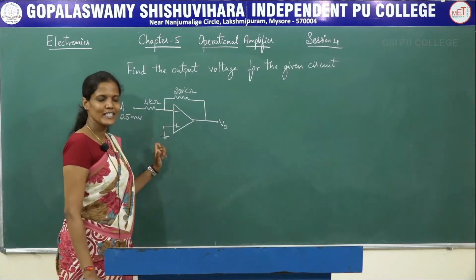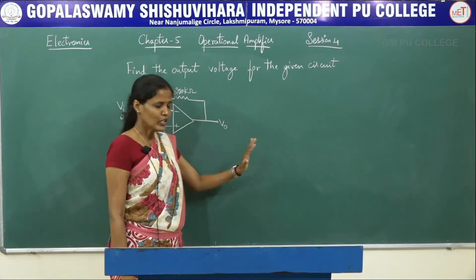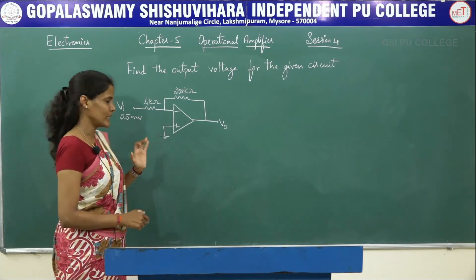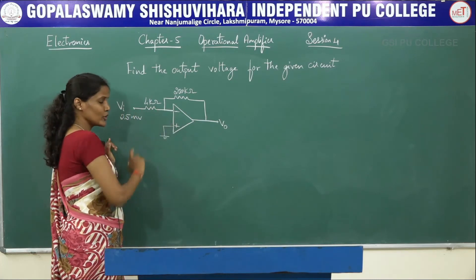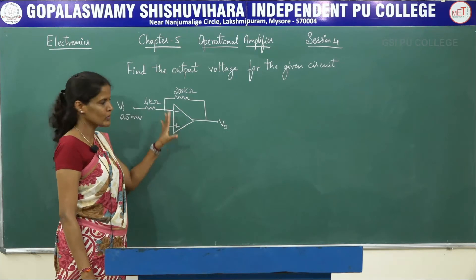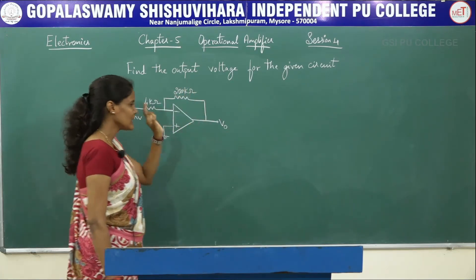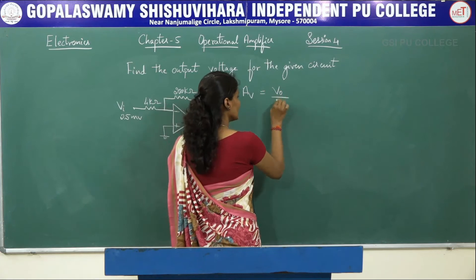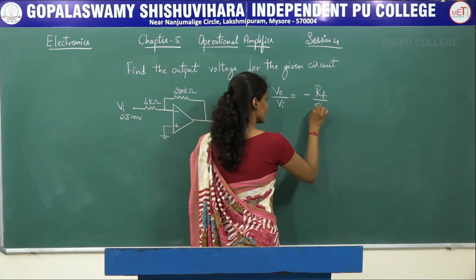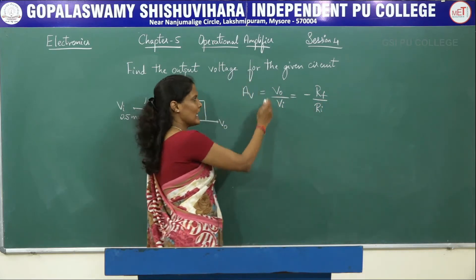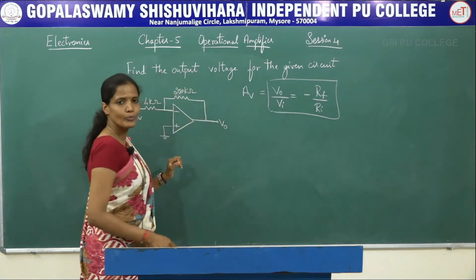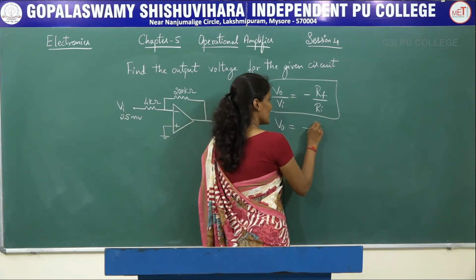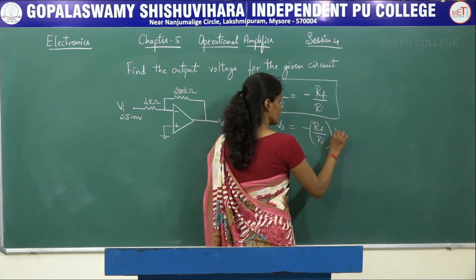Let us try to solve some problems. The first problem asks to find the output voltage for the given circuit. First, analyze the circuit and identify to which terminal of the op-amp the input signal is applied. Here, Vi is the input signal and it has been applied to the inverting input terminal of the op-amp. So this is an inverting operational amplifier. The voltage gain formula is Av = V0/Vi = -Rf/Ri, therefore V0 = -(Rf/Ri) × Vi.